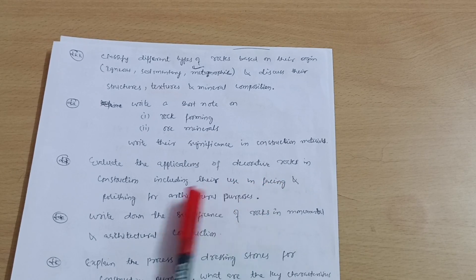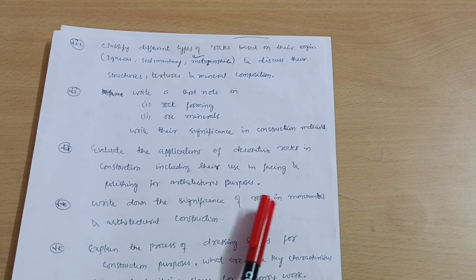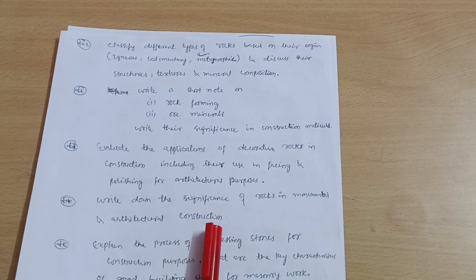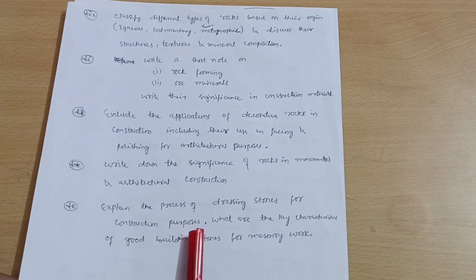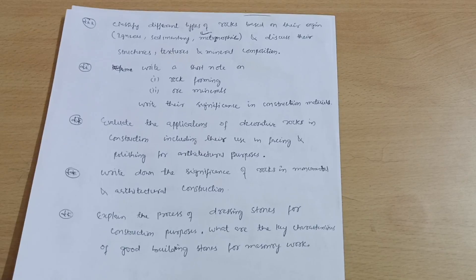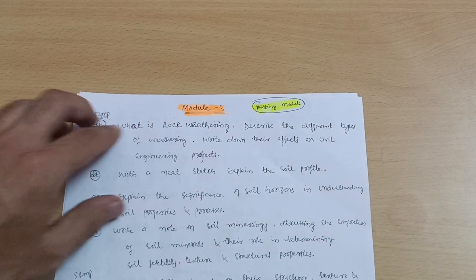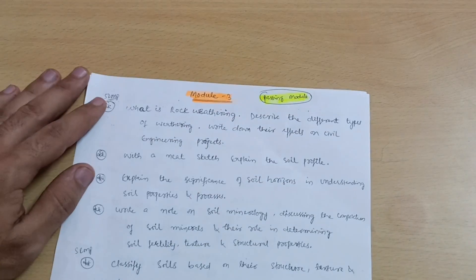Write a short note on rock-forming minerals and write their significance in construction materials. Evaluate the applications of decorative rocks in construction, including their use in facing and polishing for architectural purposes. Write down the significance of rocks in monumental and architectural construction. Explain the process of dressing stones for construction purposes. What are the key characteristics of good building stones for masonry work? This is all about Module 2.